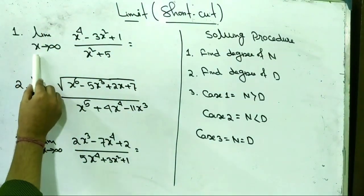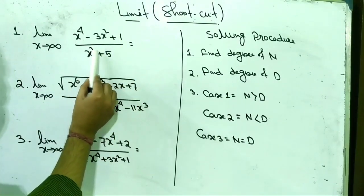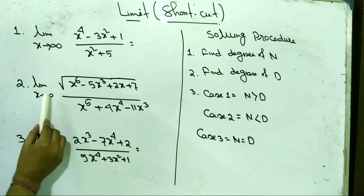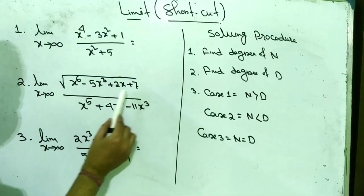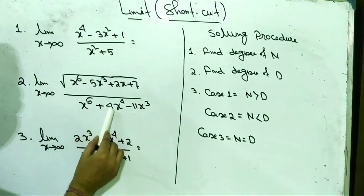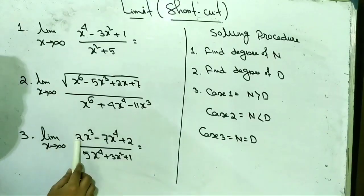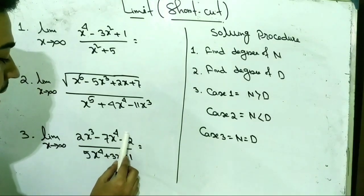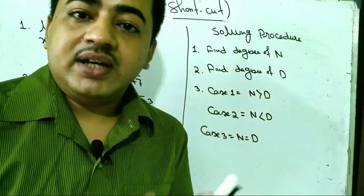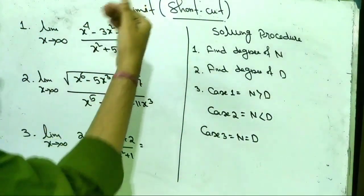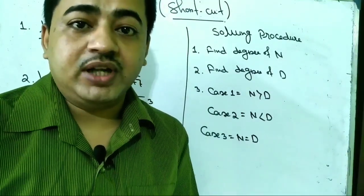Example number 1: limit x tends to infinity, x to the power 4 minus 3x squared plus 1, by x squared plus 5. Example number 3: limit x tends to infinity, 2x cubed minus 7x to the power 4 plus 2, by 5x to the power 4 plus 3x squared plus 1. This problem if we solve by the normal method, x tends to infinity means 1 by x tends to 0. But this is a super trick which we can solve in 3 seconds.